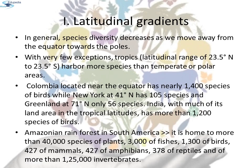A forest in a tropical region like Ecuador has up to 10 times as many species of vascular plants as a forest of equal area in a temperate region like the Midwest of the USA. The largely tropical Amazonian rainforest in South America has the greatest biodiversity on Earth. It is home to more than 40,000 species of plants, 3,000 species of fishes, 1,300 of birds, 427 of mammals, 427 of amphibians, 378 of reptiles, and more than 1,25,000 invertebrates. Scientists estimate that in these rainforests, there might be at least 2 million insect species waiting to be discovered and named.